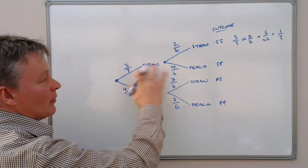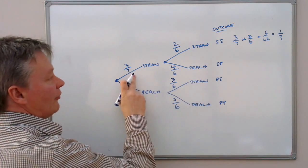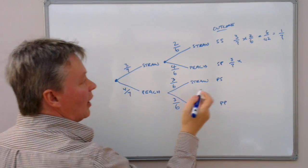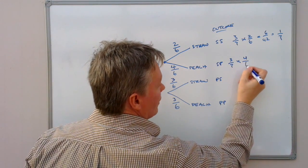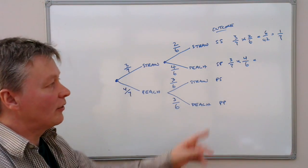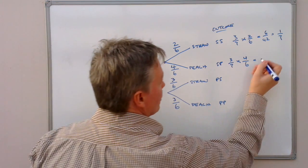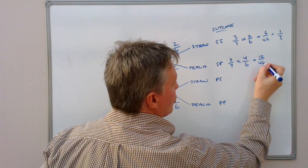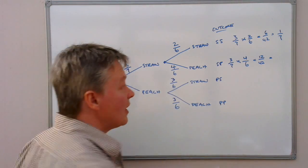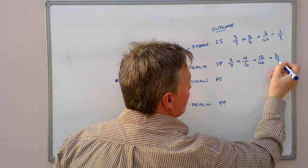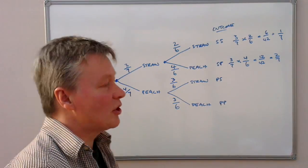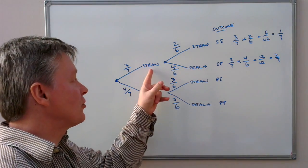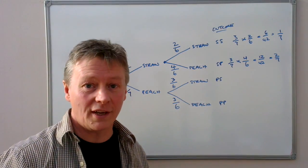For strawberry then peach, the first probability was three sevenths multiplied by four sixths. Three times four is 12, and seven times six is 42, giving 12/42. Reducing that down gives two sevenths. So there's a two out of seven probability of her picking firstly a strawberry and then a peach the second time round.